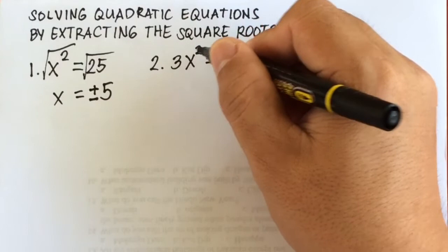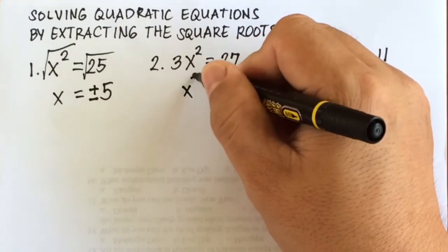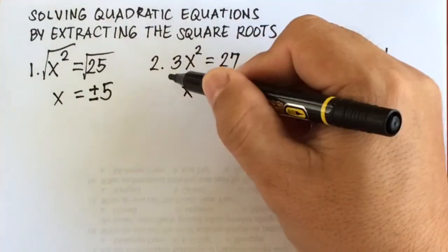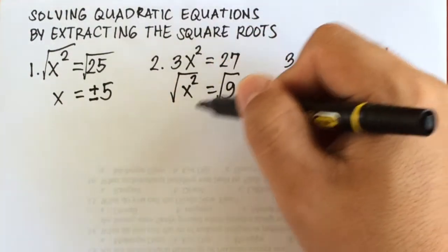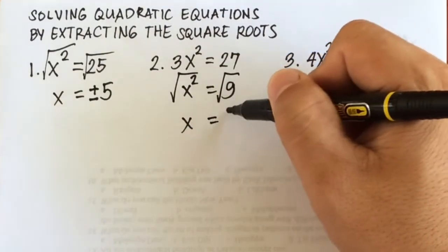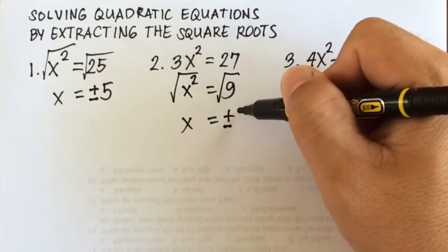Dividing by 3, the answer here will be x squared. Then 27 divided by 3 is 9. Then, extracting the square roots. Square root of x squared is x. Square root of 9 will be positive negative 3.